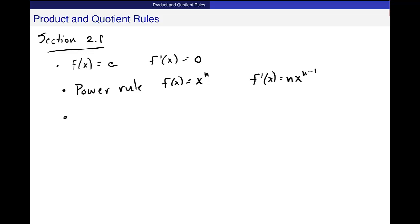We also had the rule for a constant multiplier. The derivative d by dx of c times f of x is equal to c times the derivative of f of x, or this is c times f prime. I can just pull that constant multiplier out.